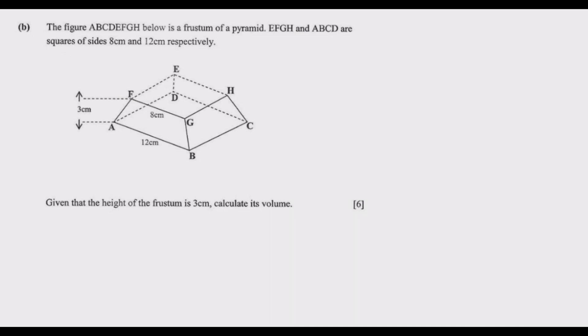The figure ABCDEFGH below is a frustum of a pyramid. EFGH and ABCD are squares of sides 8 centimeter and 12 centimeter respectively. Given that the height of the frustum is 3 centimeter, calculate its volume.